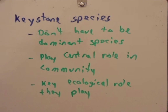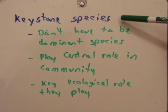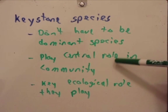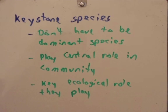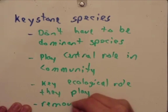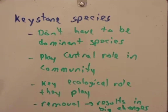One problem with the keystone species concept is that often a community will have many keystone species. In some communities one might argue that removing any organism has an effect, because they're all reliant upon each other due to the interwoven trophic structure. For this class, recognize that keystone species don't have to be dominant species — they play a pivotal role because of the ecological niche they occupy, and removing them results in big changes to the community.